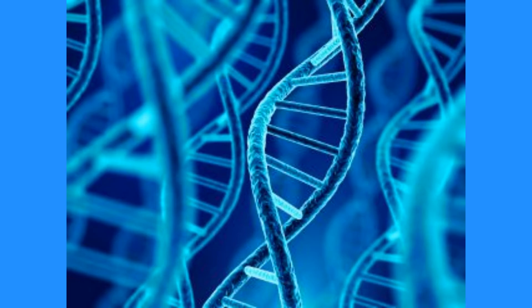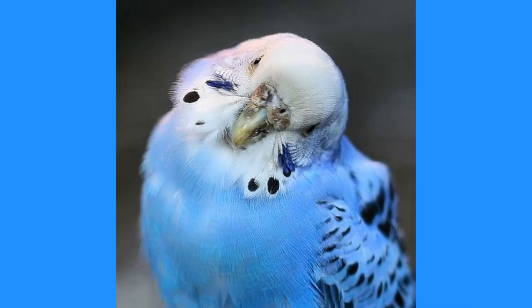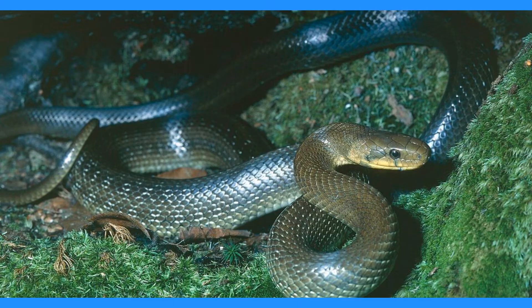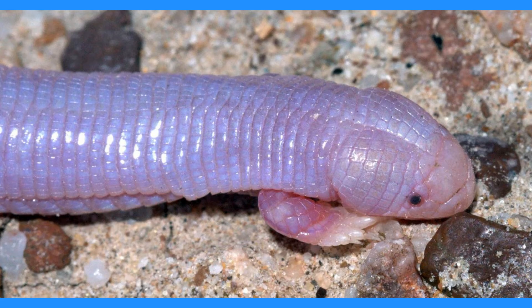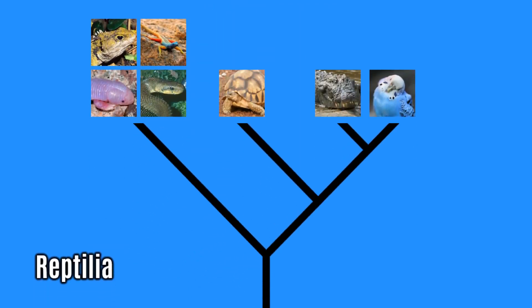It turns out that crocodilians and chelonians are more closely related to birds than either crocodilians or chelonians are to lizards, snakes, or amphisbaenians. And so if we want Reptilia to be a class that does actually recognise relatedness, then birds would have to be considered reptiles.